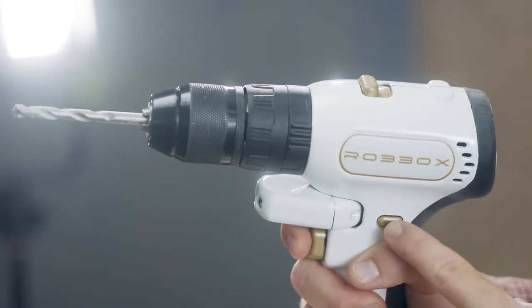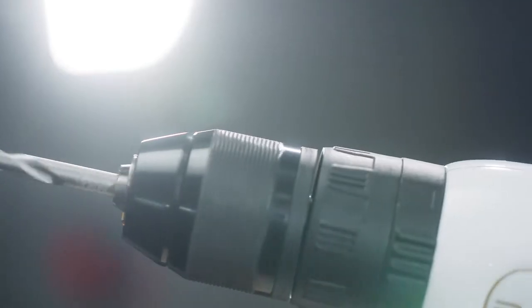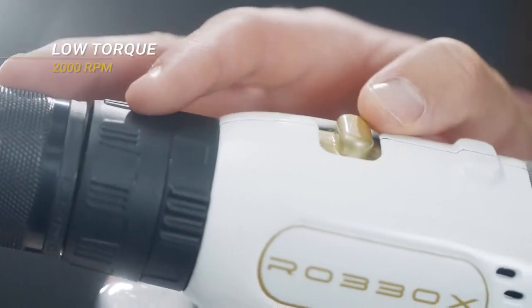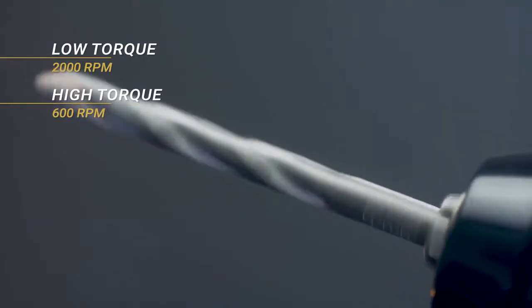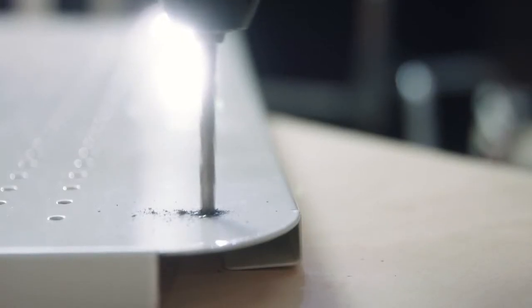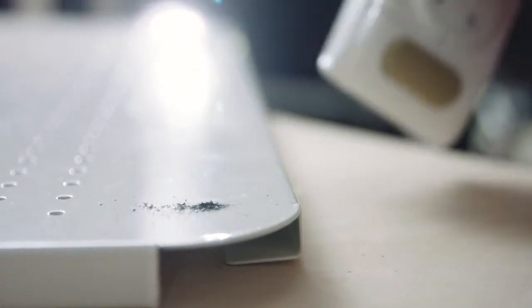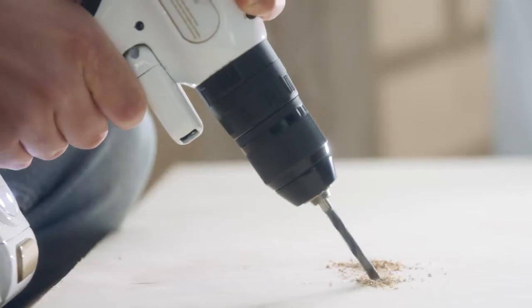The drill works both forward and reverse, and its high-speed low torque reaches 2000 rpm, while low-speed high torque goes up to 600. In case you're not a drill buff, all that technical jargon means our drill can go through the hardest surfaces and do so precisely.